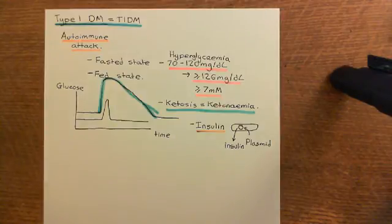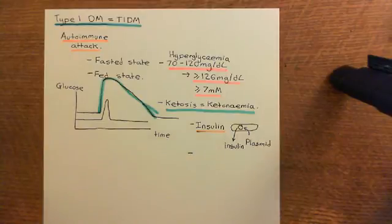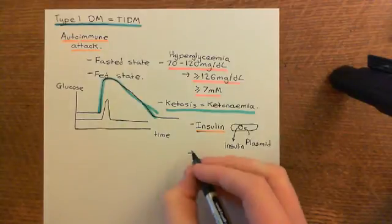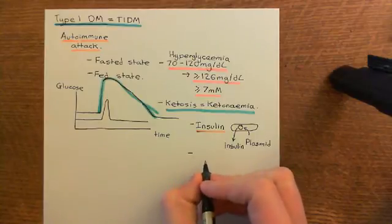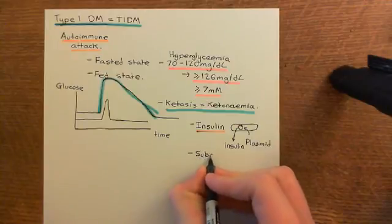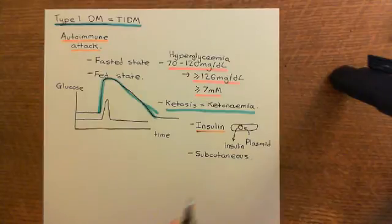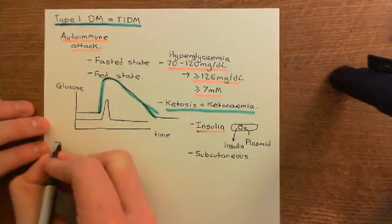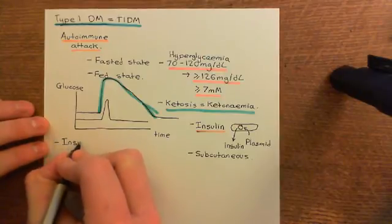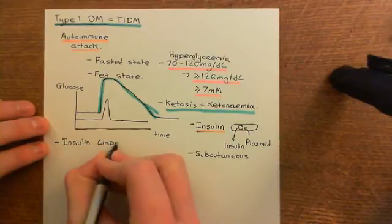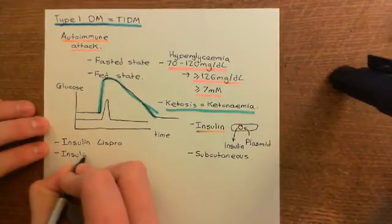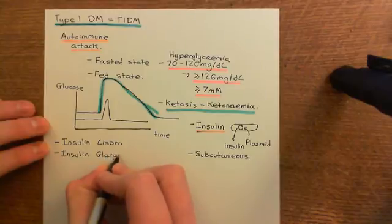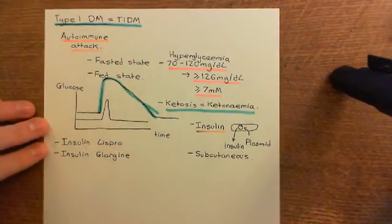You cannot give insulin orally — it's a polypeptide, so it would get broken down in the gastrointestinal tract. Instead you have to give it parenterally, which means avoiding the oral route, generally by subcutaneous injection underneath the skin. We have also made two modified forms of insulin: insulin lispro and insulin glargine. These are man-made forms where we have changed the original insulin slightly, resulting in changes in properties.